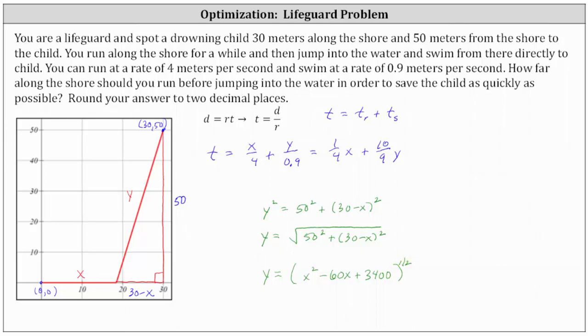Which means we can now write the time function as T equals (1/4)x plus (10/9) times the quantity (x² - 60x + 3400)^(1/2).